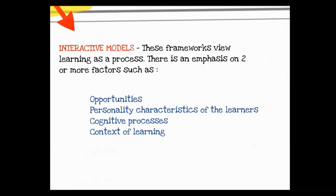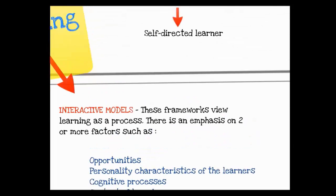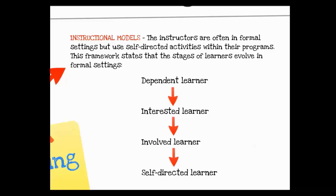Interactive models view learning as a process, but one that is not linear or well-planned. There is an emphasis on two or more interacting factors, such as opportunities available, personality characteristics, cognitive processes, and the context of learning. Finally, there are instructional models, where instructors in more formal settings use self-directed activities within their programs. In this framework, learners evolve from being dependent learners, to interested, to involved, and finally to becoming self-directed learners.